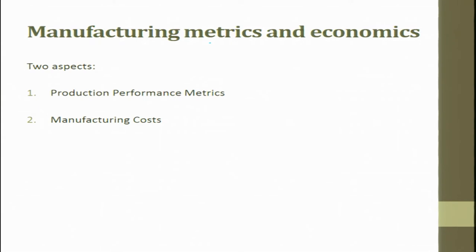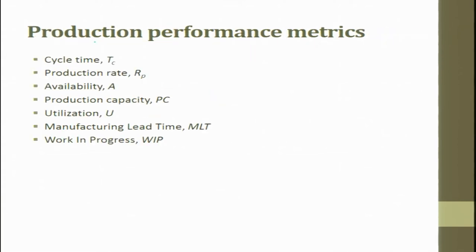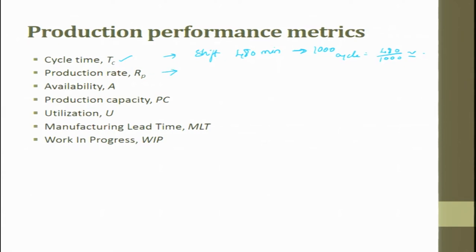There are two types of manufacturing metrics: production performance metrics and manufacturing cost. Production performance metrics talks about cycle time. If in a shift there are 480 minutes of working and 1000 items must be produced, the cycle time is 480 divided by 1000. Key metrics include production rate (RP), availability (A), production capacity (PC), utilization (U), manufacturing lead time (MLT), and work in progress (WIP).